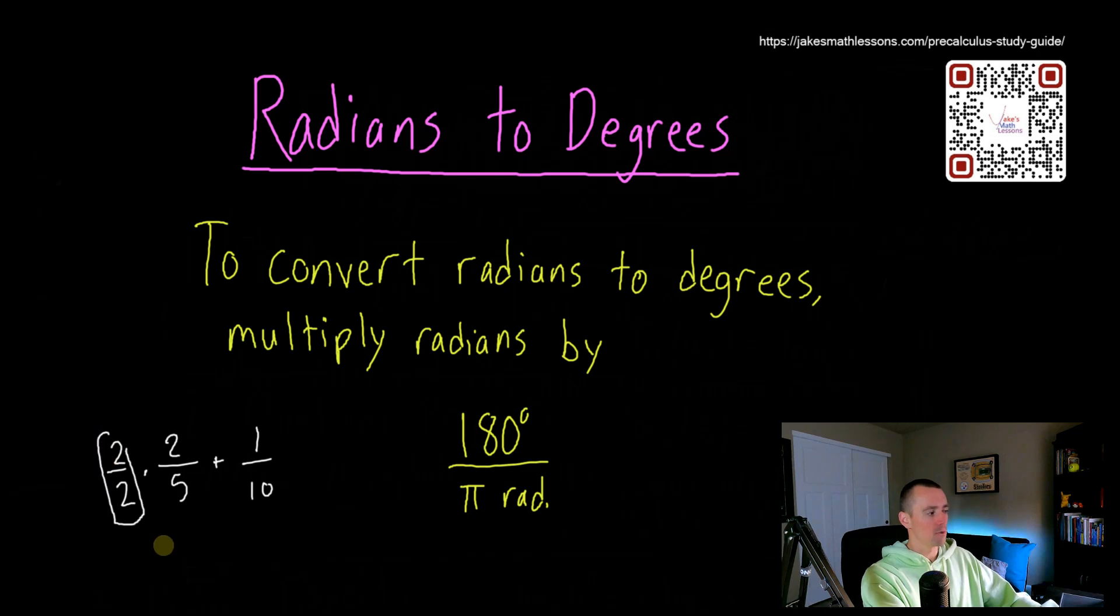Well, what you do here, multiplying by 2 over 2, that's the same as multiplying by 1, right? Which multiplying something by 1 doesn't change its value. So multiplying something by 180 degrees over pi radians, that's like multiplying by 1 because those two things are equal. So you're not changing its value. All you're doing is converting it into a different measure of units, essentially.